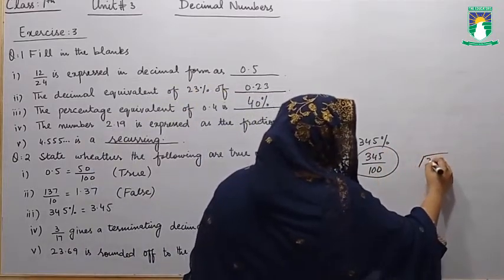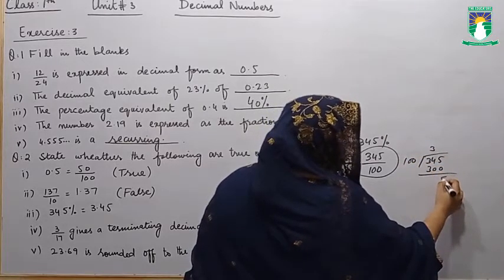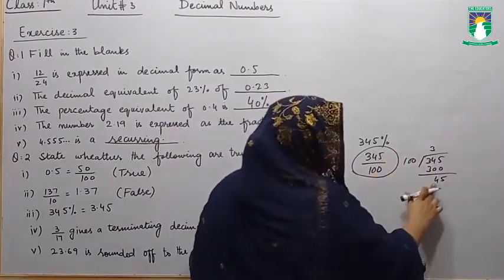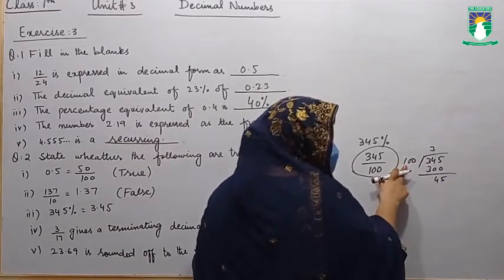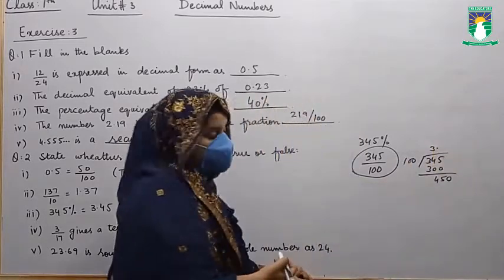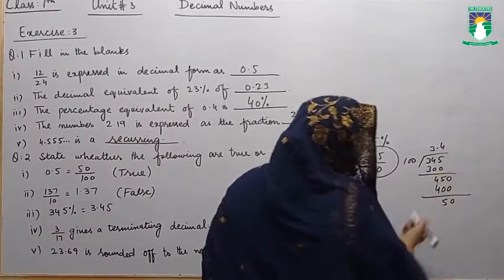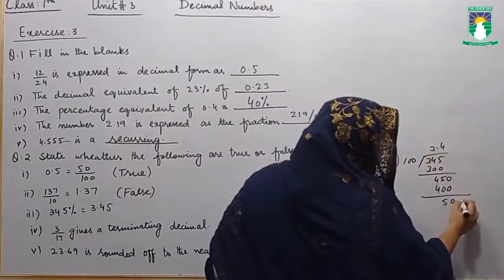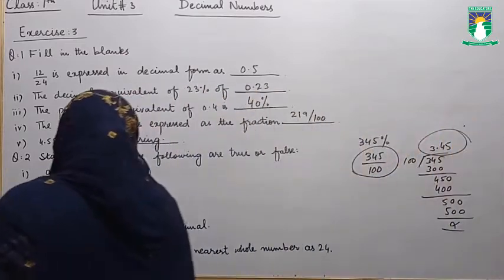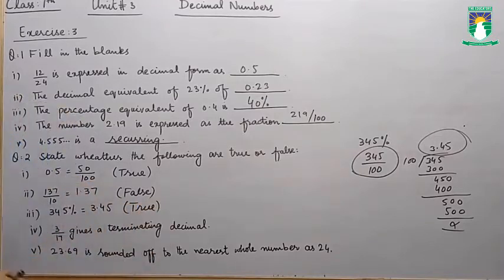Now we divide 345 by 100. 100 threes are 300; subtracting gives 45. Since 100 is greater than 45, we place a decimal point and 0. 10 fours are 400; subtracting gives 5. Then 100 fives are 500. The answer is 3.45, and the statement also says 3.45 — so it is a true statement.